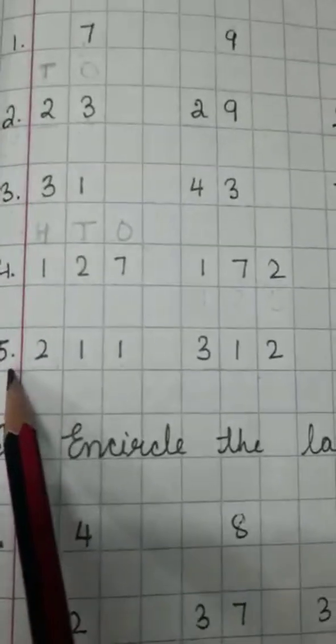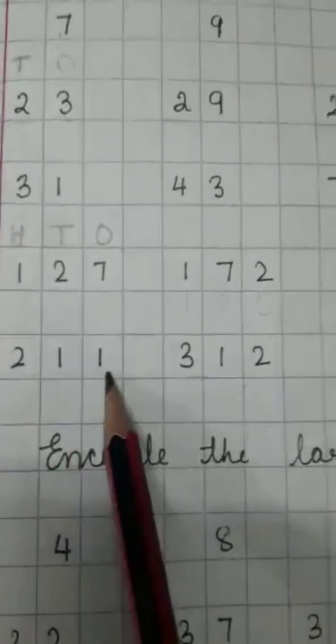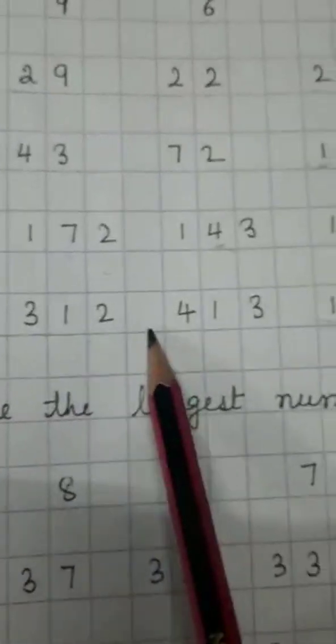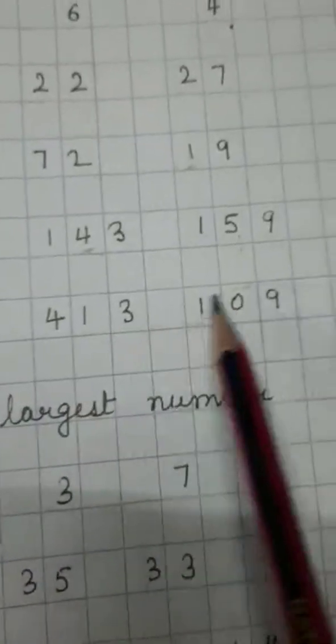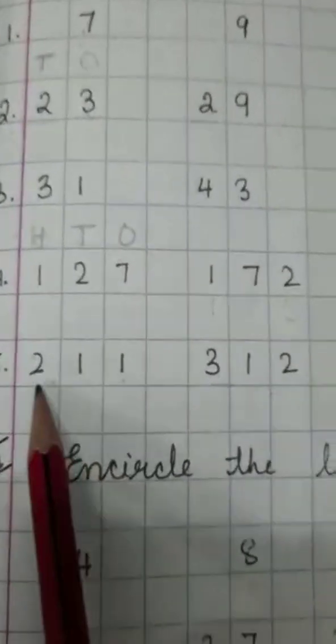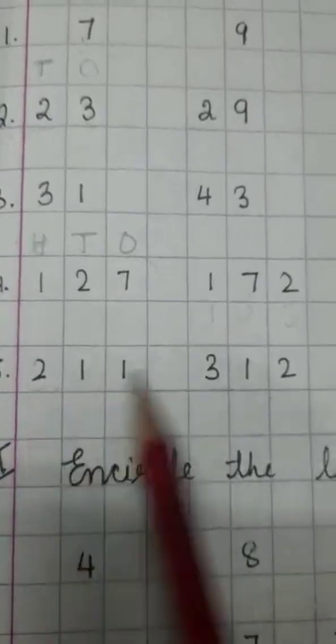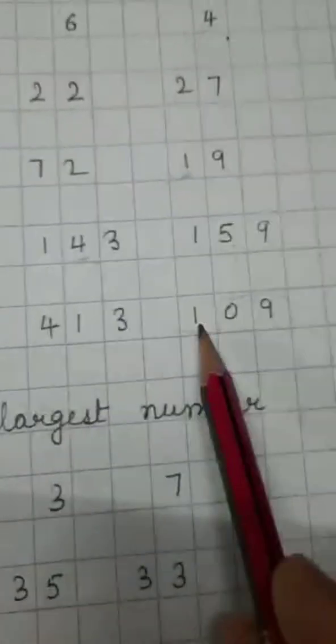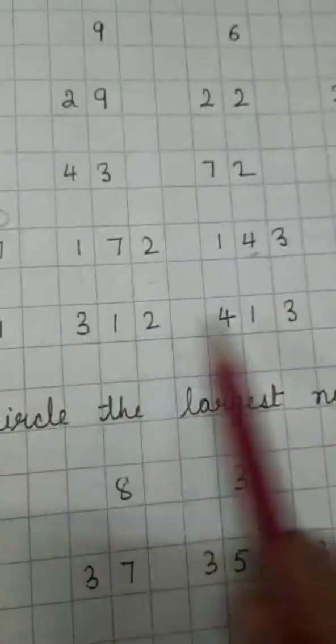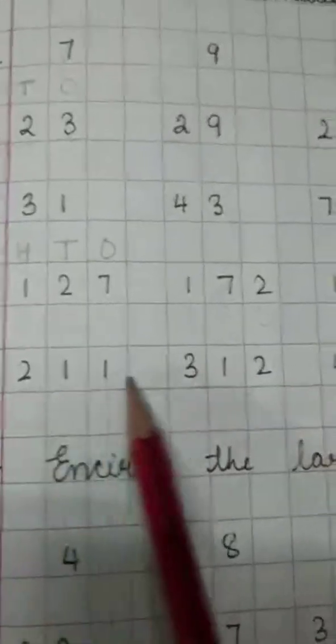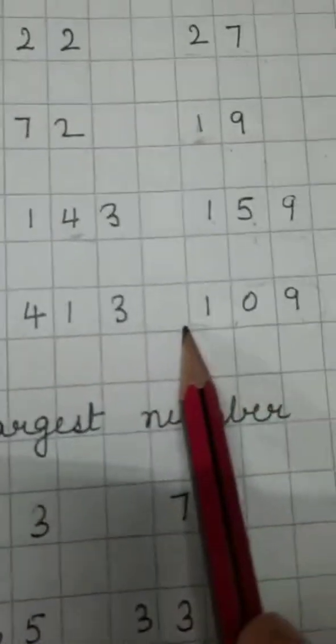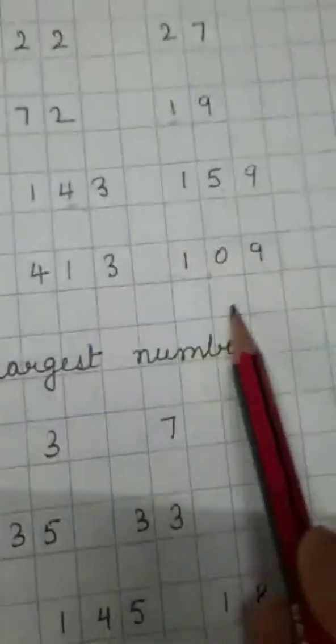Now the next question is 211, 312, 413, 109. Now see, we will check 100s place, right? First we will check 100s place. 2, 3, 4, 1. So all are different. So which is the smallest over here? 1. So 109 is the smallest number and we will encircle this number.